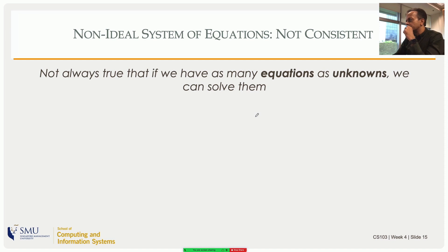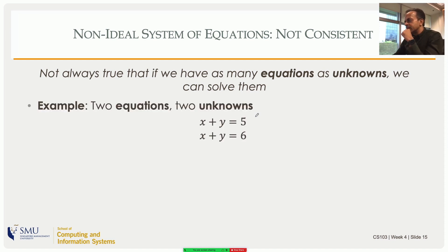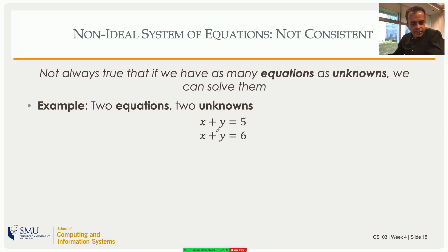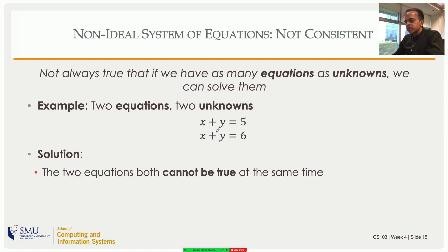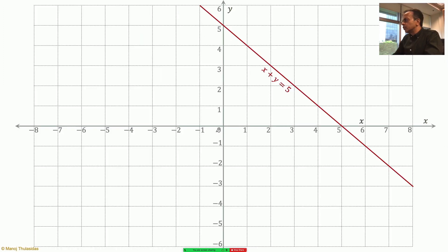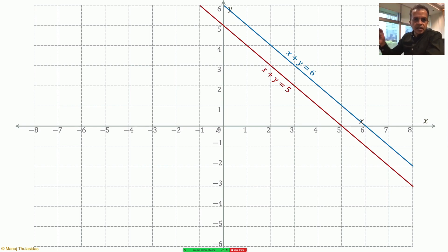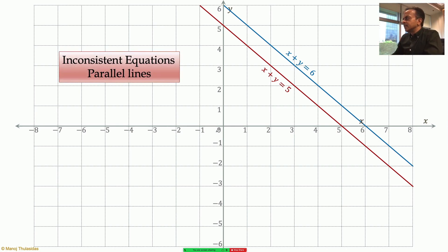Here's another situation: two equations, x + y = 5 and x + y = 6. There is no pair of x and y that satisfies both — that's what inconsistency means. The first equation is one line and the second is another parallel line. There is never a point belonging to both lines, so there is no solution. These are inconsistent equations resulting in parallel lines.